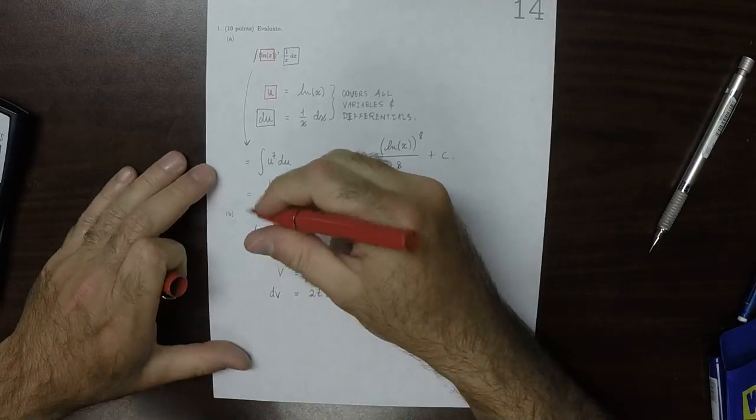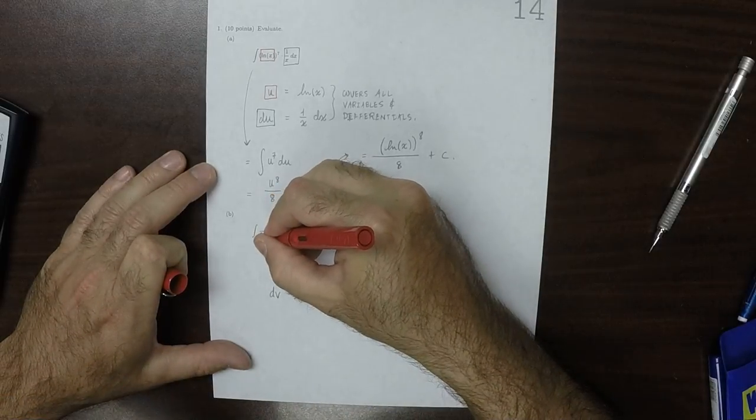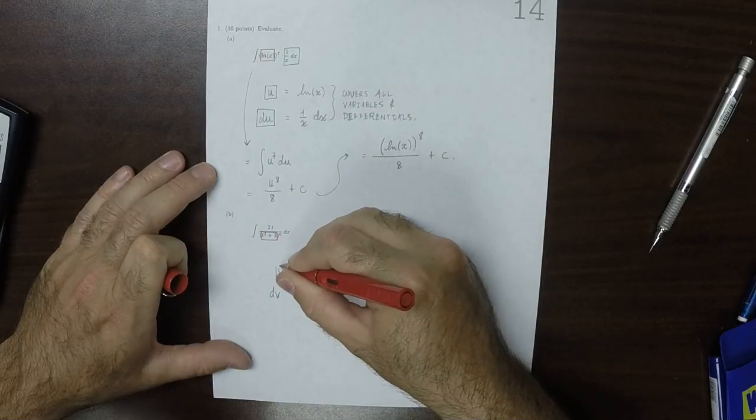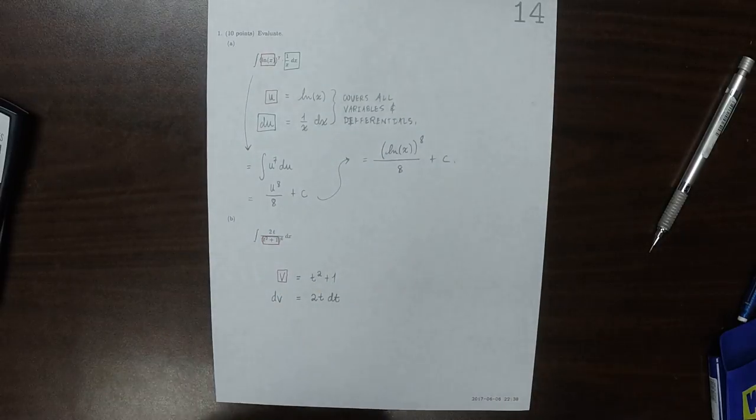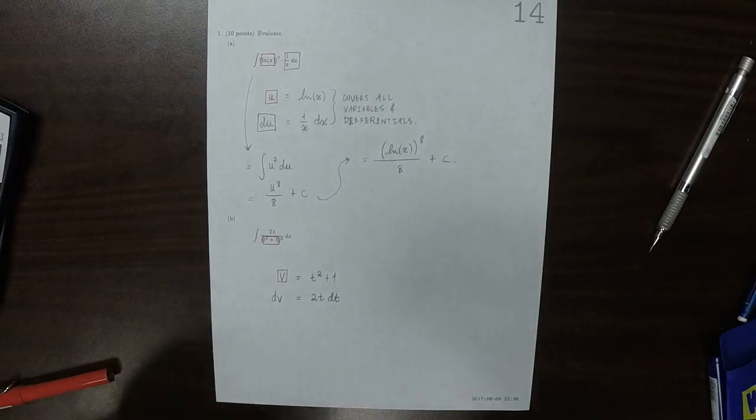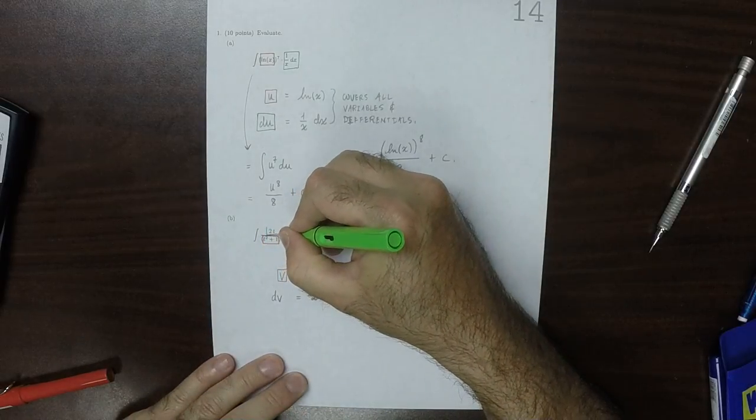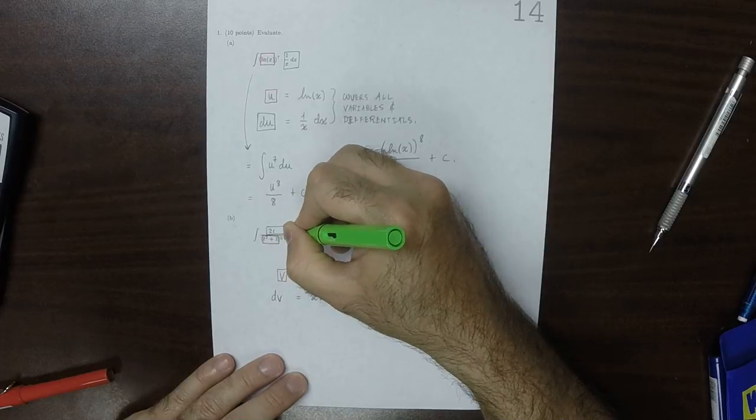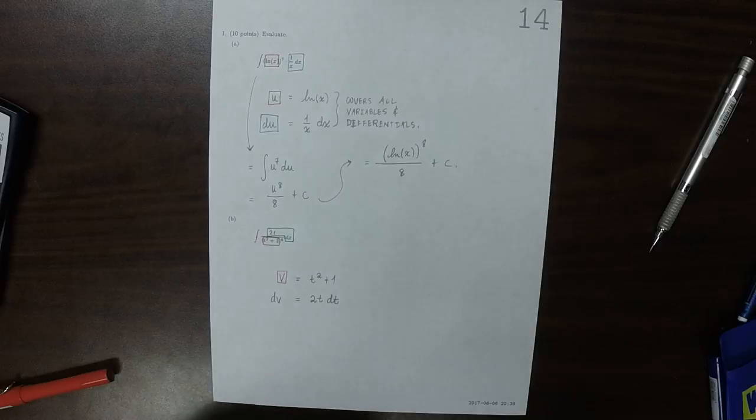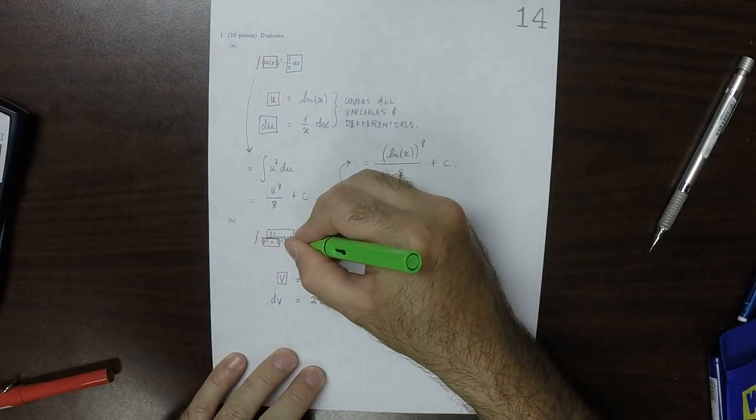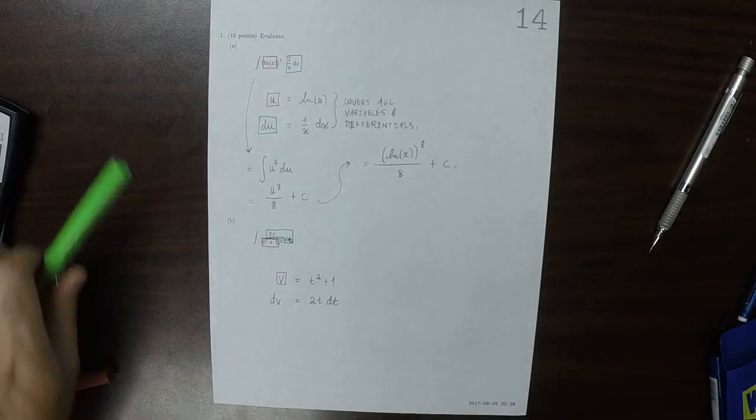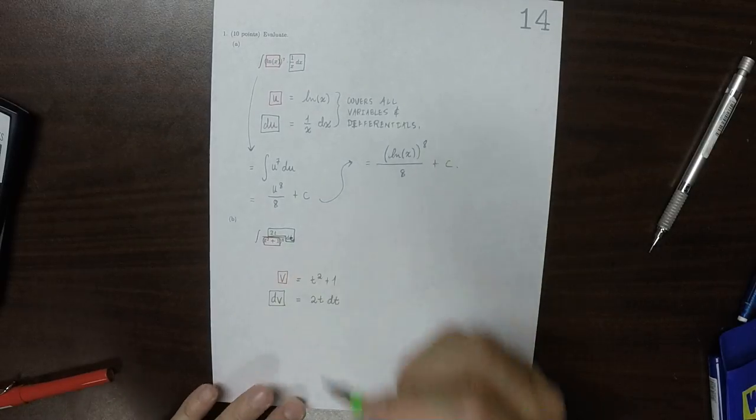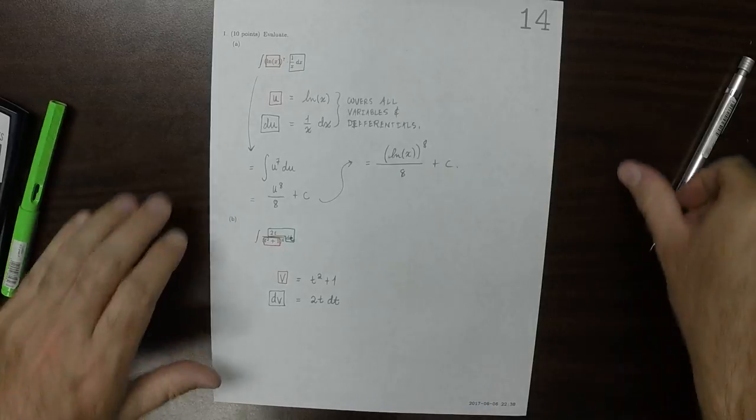So doing that, this whole box, everything in that box will be covered by the v, and then everything in the green, 2t d—that should be a t right there, so that should be a t—it's covered by dv. The 6 isn't covered but it's not a variable or a differential, it's a constant, so that doesn't matter.